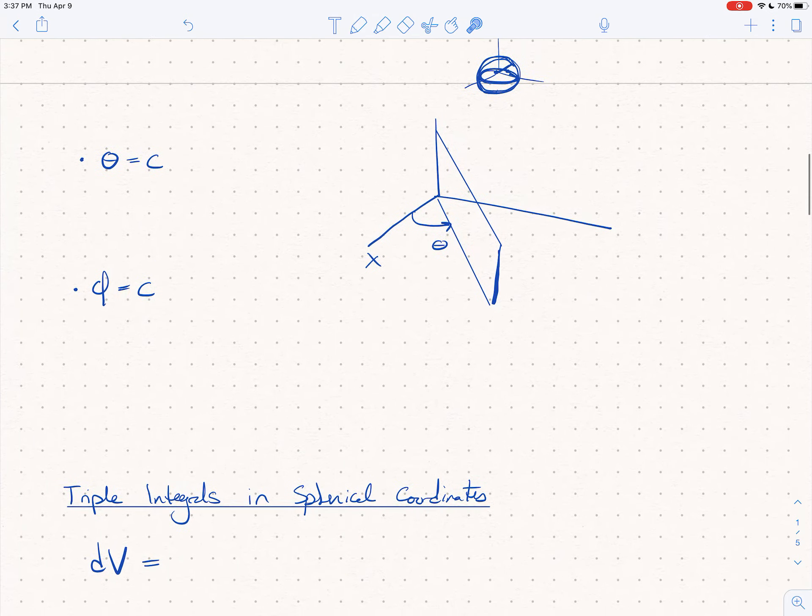So now the last one is phi equals c. What happens if you hold phi constant? So again, I would highly encourage you to pause the video and see what you can come up with.